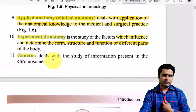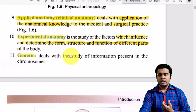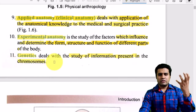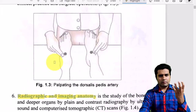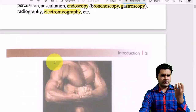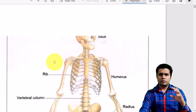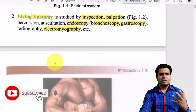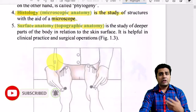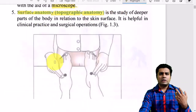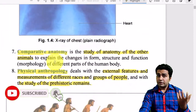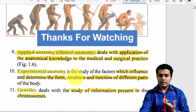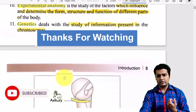The eleventh component is genetics, in which we study the information present in our chromosomes. To summarize, all 11 components are parts of anatomy. The most important are cadaveric anatomy, followed by surface anatomy, living anatomy, histology, embryology, radiological anatomy, comparative anatomy, physical anthropology, applied anatomy, experimental anatomy, and genetics.